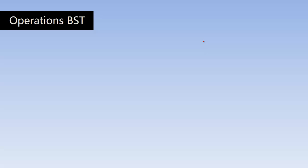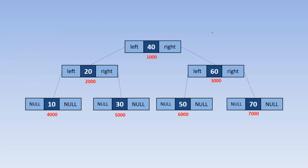Let's find out what operations we can perform on a binary search tree. Find — you can find or search any element present in the tree. Insert — you can insert a new node into the tree. Delete — you can delete a node from the tree.